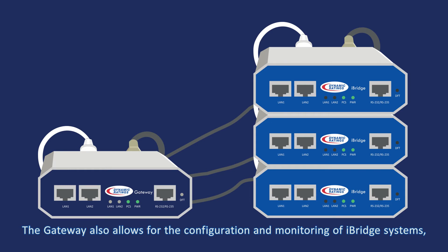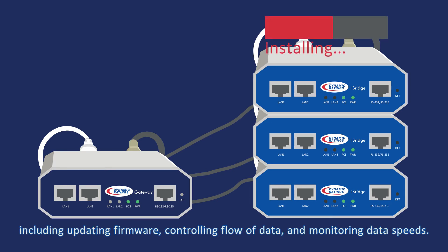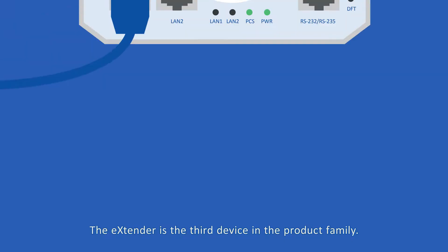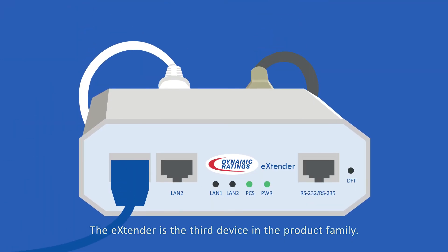The gateway also allows for the configuration and monitoring of iBridge systems, including updating firmware, controlling flow of data, and monitoring data speeds. The extender is the third device in the product family.